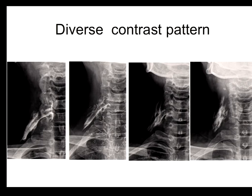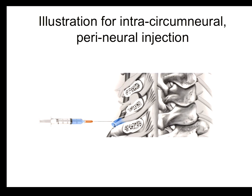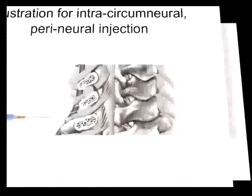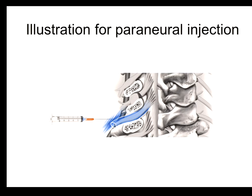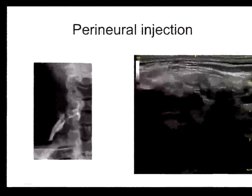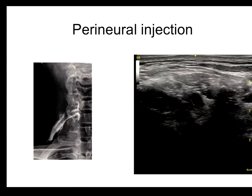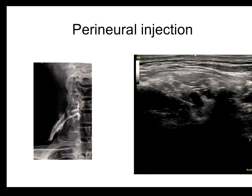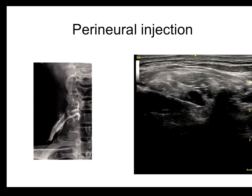You can get very diverse contrast patterns after ultrasound-guided injection, ranging from optimal to intramuscular injection — the latter being a failure. For an intra-circumneural or perineural injection, if you place the needle inside the circumneural sheath you get the optimal image. For a paraneural injection, if the needle tip is at the wall of the circumneural sheath, some injectate goes perineural and some leaks into the intramuscular layer. This is a demonstration: you can see the well-defined hypoechoic nerve root, place the needle behind it, and identify the circumneural or intra-circumneural space.